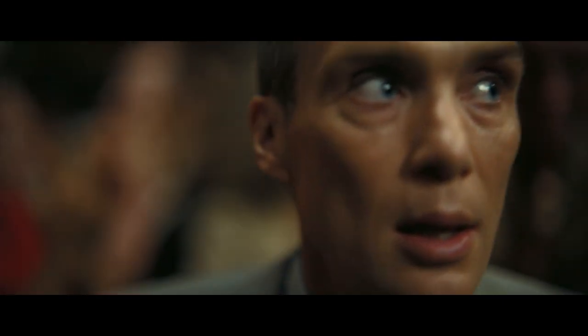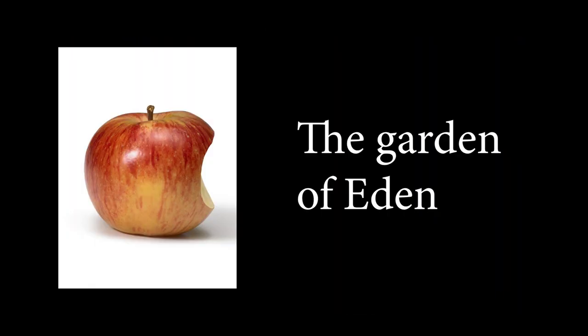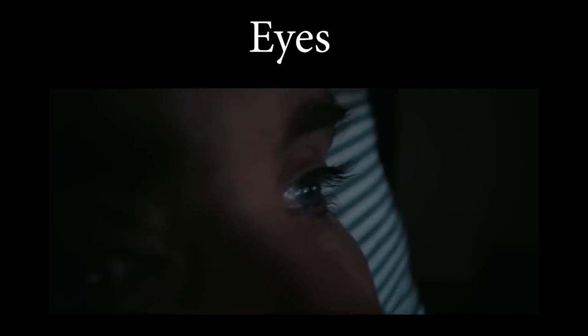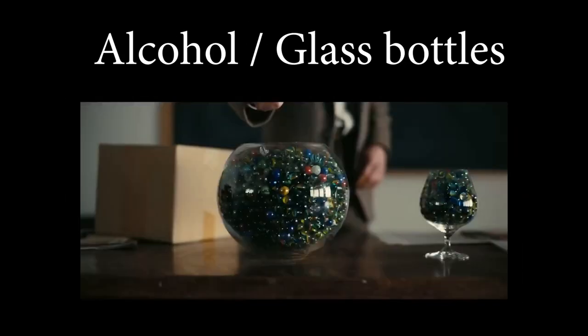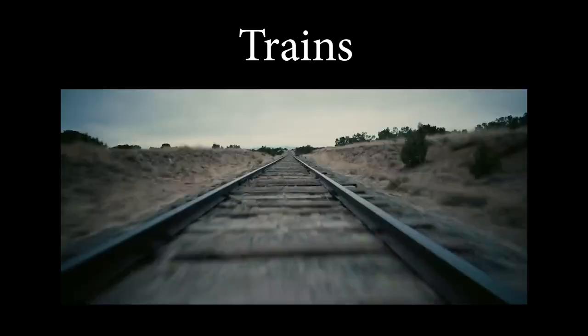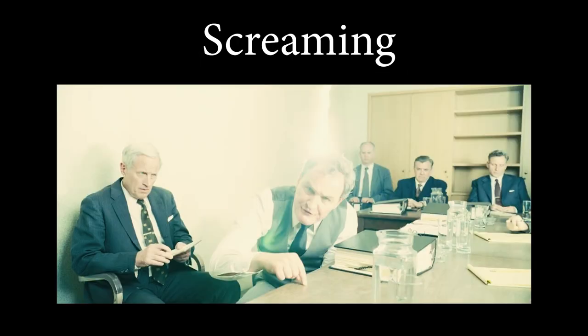Let's talk about nine hidden messages in Oppenheimer. They're all based on visual and verbal cues such as ripples, the Garden of Eden, eyes, compartmentalization, alcohol and glass bottles, trains, snow and ashes, flashes of light, and screaming. There will be spoilers in this video, so consider yourself warned.